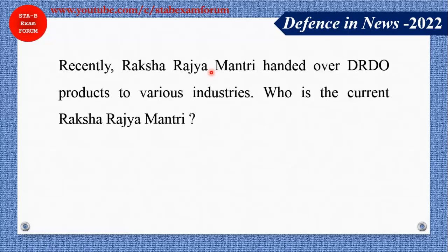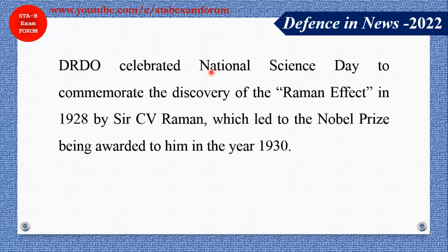Recently, the Raksha Rajyamantri handed over DRDO products to various industries. Who is the current Raksha Rajyamantri? As you know, Rajnath Singh is the Defence Minister, but the Raksha Rajyamantri — the Minister of State for Defence — is Ajay Bhatt.